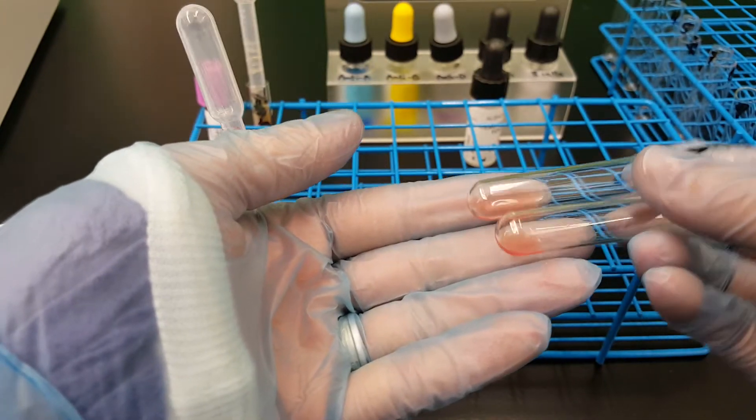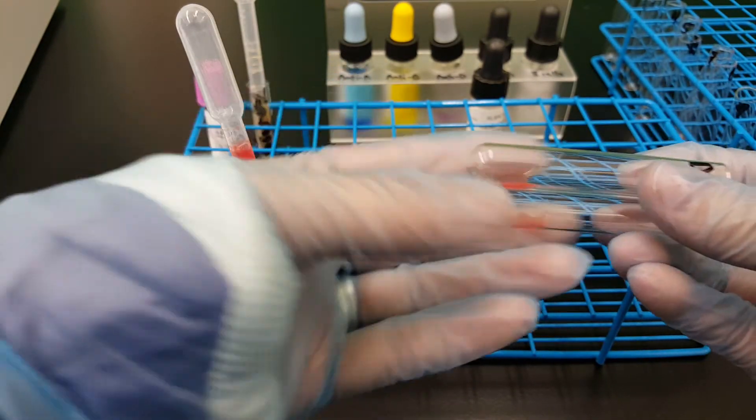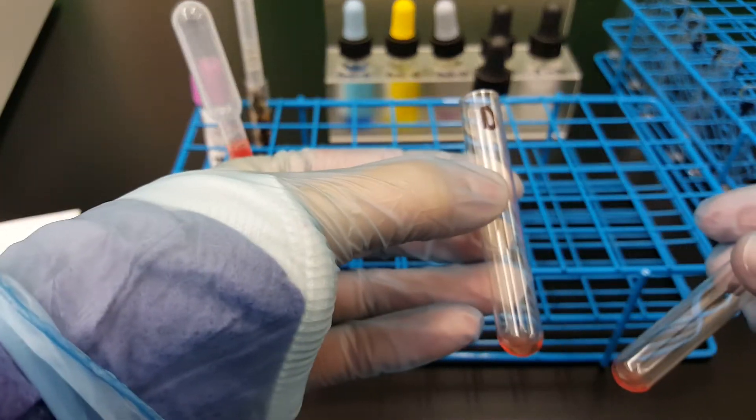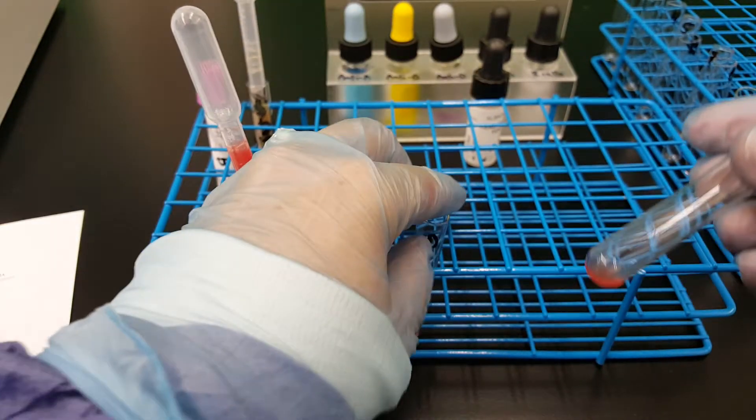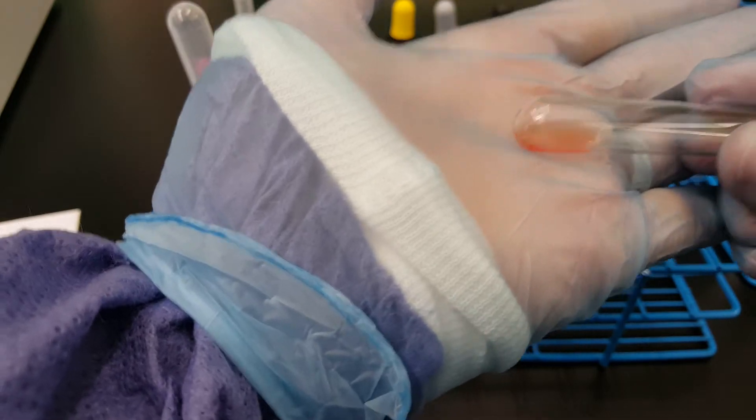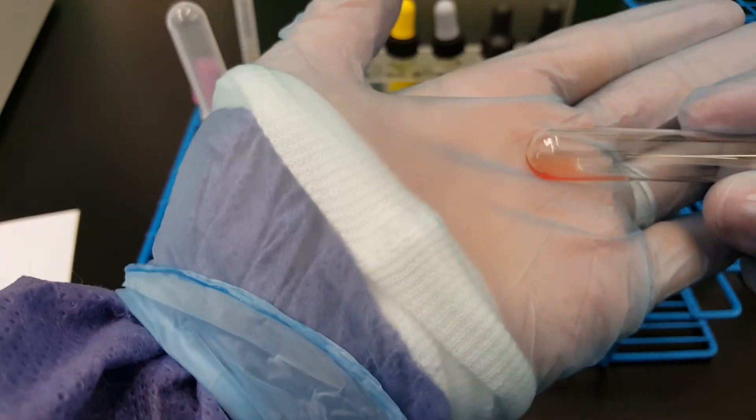So just like we saw before when we did the ABO, the D is considered negative, the anti-D is considered negative. There aren't any agglutinates in there and same with the D control.